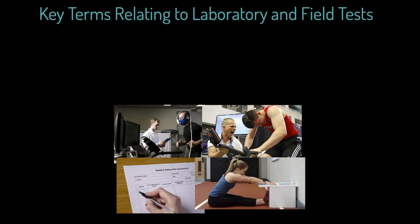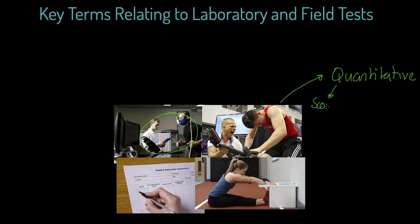Let's demystify and clarify some technical terminology. I've included some fitness testing type images to give us a start point. The first thing I want to address is quantitative data. A great example here is direct gas analysis — we're getting a very specific score readout with no opinion or interpretation. We've got scores, ratios, and in this case an oxygen consumption reading. This is what quantitative data is.